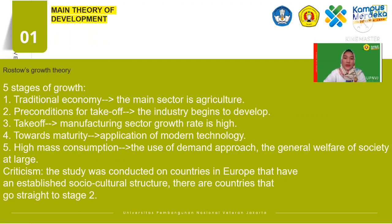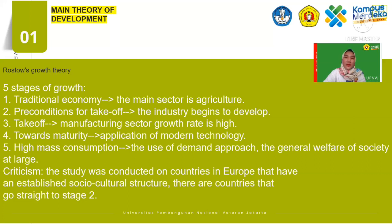Now let's move to the Rostow growth theory. There are five stages. Number one is the traditional economy — the main sector, with many agricultural sectors. Number two is the preconditions for take-off — how every sector in the country will move toward industrial, and this is the beginning for development. Number three is the take-off — the manufacturing sector grows at a higher rate than agriculture. Number four is toward maturity — the agricultural sector moves to industrial or manufacturing, applying modern technology. And the last, number five, is the age of high mass consumption — the use of the demand approach and the general welfare of society at large.